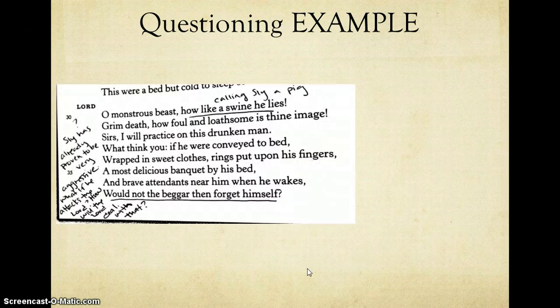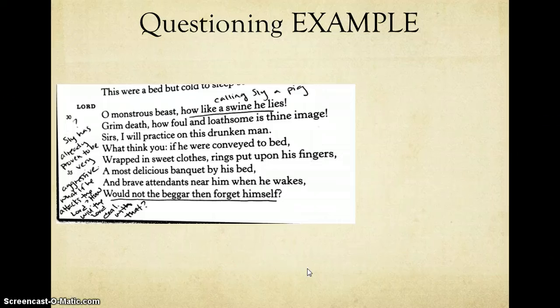The example that I came up with is when the Lord, another character, comes into the same scene where Sly has been. And this is his reaction when he first sees him. He calls him a swine, so he's calling Sly a pig. And Sly has been, he's asleep. And the Lord is starting to think about what trick he wants to play on Sly, on this drunken man that he's found passed out. So my question is, Sly has already proven to be very aggressive. We just saw that in the previous scene, or in the previous page. What if he attacks the Lord?